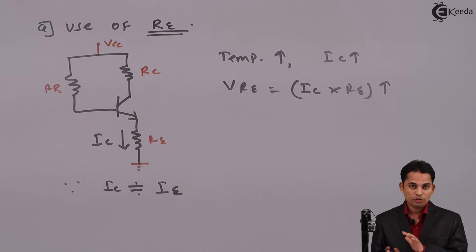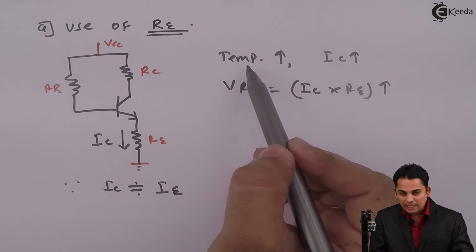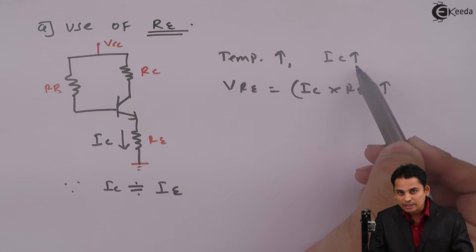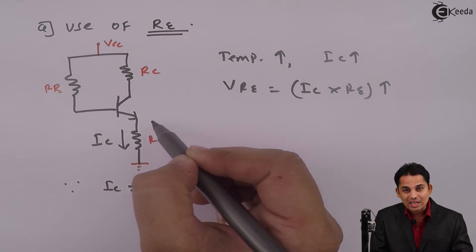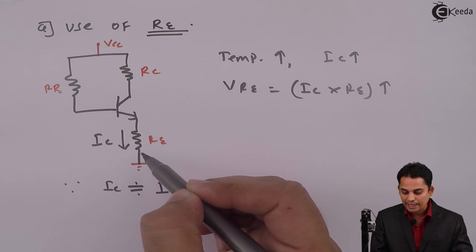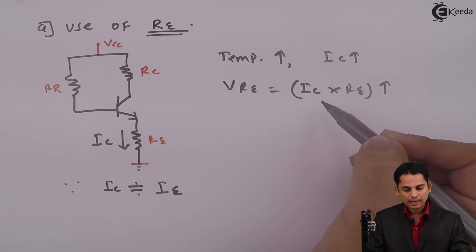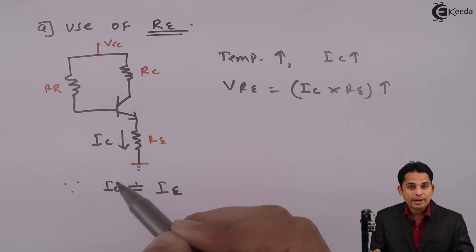See carefully. It is very important that when temperature increases, IC will increase, and because of that voltage drop across RE, that is called VRE, increases. And this will provide negative feedback.